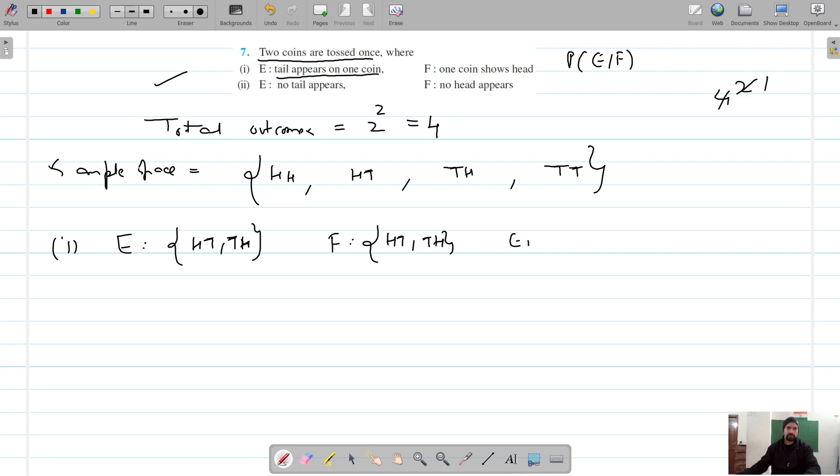The common outcomes between these two is HT and TH. Because we have to find the probability of E given F, the probability of E intersection F is 2/4, and probability of F is 2/4.